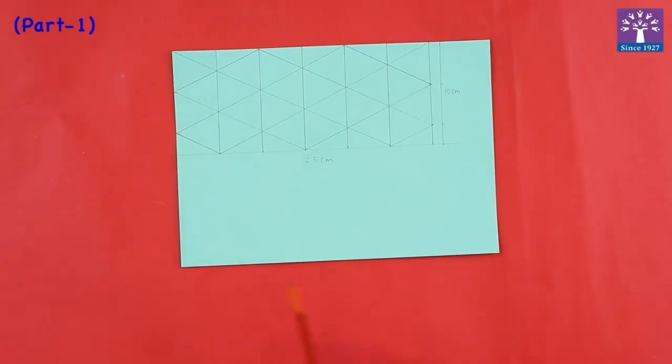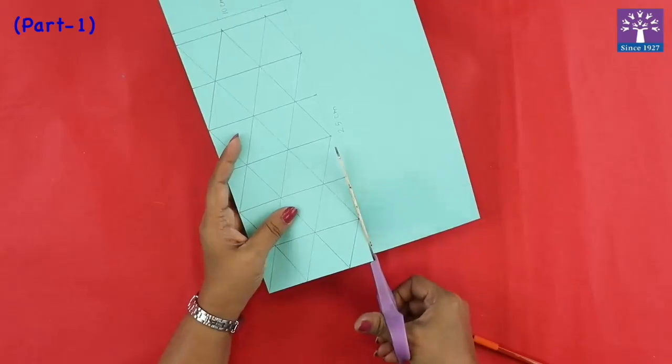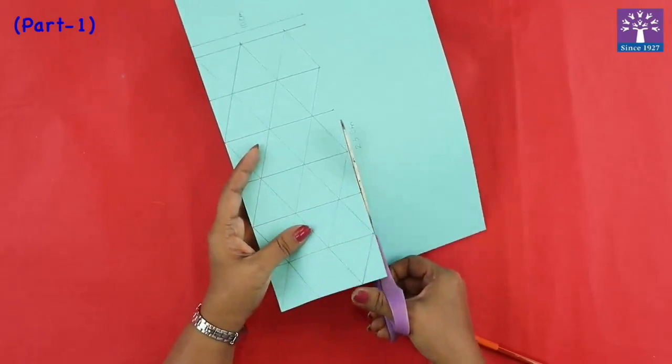So we have finished drawing this flex tangle template. Now what we will do is we will cut the rectangle out. Make sure you cut on the line very neatly.